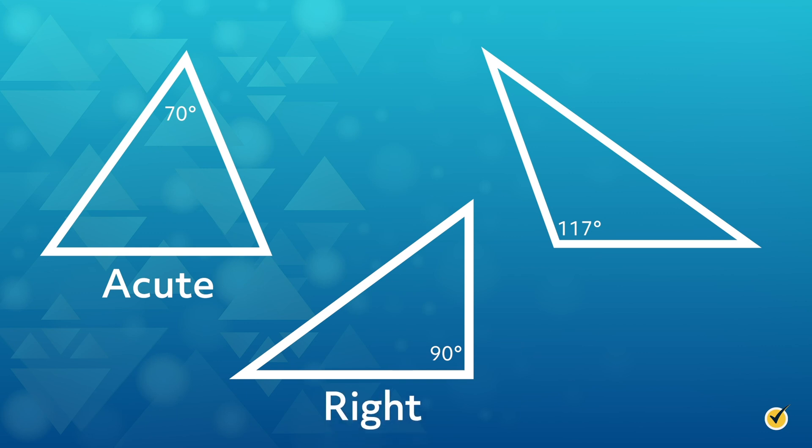Finally, in the triangle on the right, the largest angle is 117 degrees. Because this is more than 90 degrees, this is an obtuse angle, so we call this triangle an obtuse triangle.